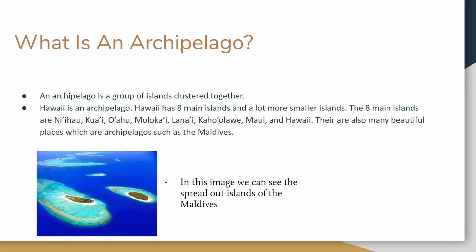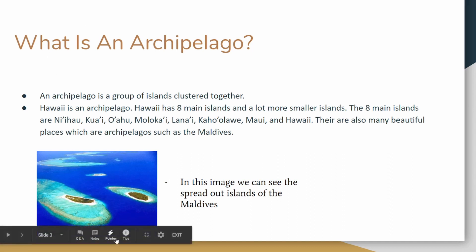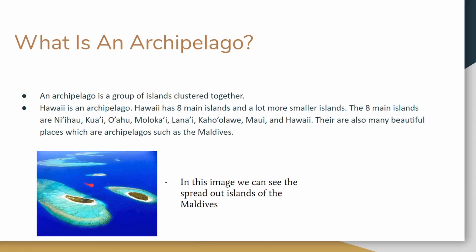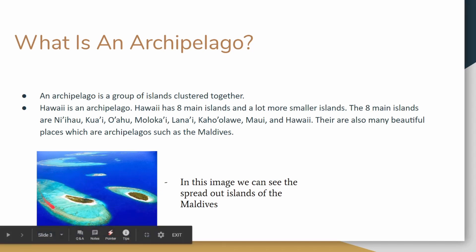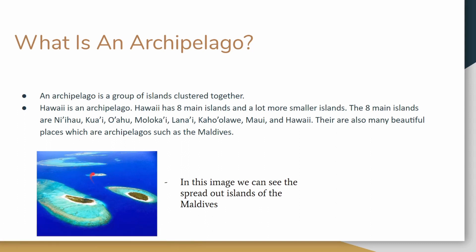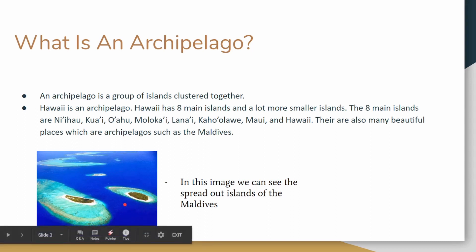In this image down here, bottom left, can you see where the water is? If you can see it, you can see that all these islands are separated and not connected with each other. So that's what an archipelago is. This picture is a really good example.